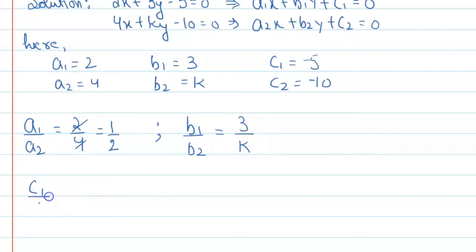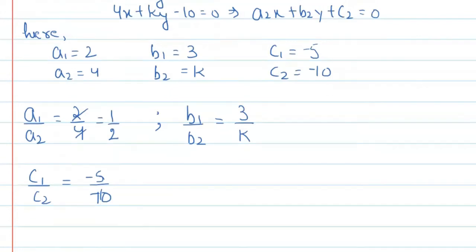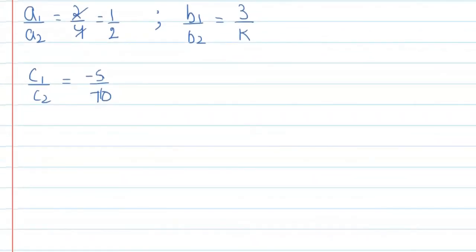And the ratio c1/c2 = -5 / -10, which simplifies to 1/2.